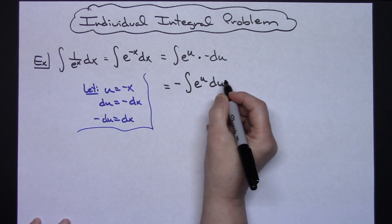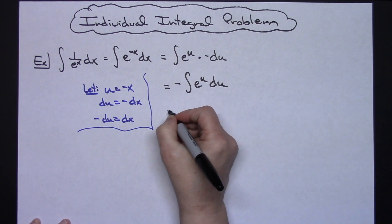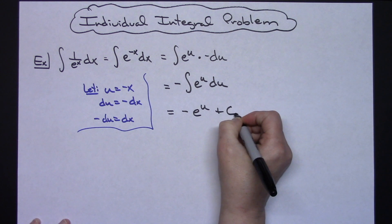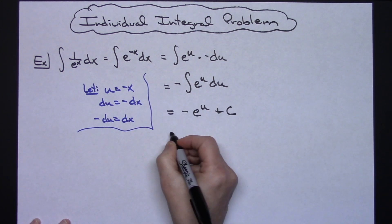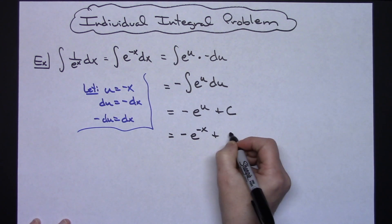And now this is something that we know how to integrate. Integrating e to the u we get e to the u. With the negative out there in front I'll have negative e to the u plus c. Replacing my u with negative x I'll have negative e raised to the negative x plus c.